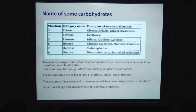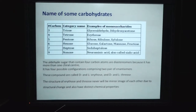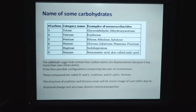If the carbon number is 6, it is called hexose. The examples of hexose are glucose, galactose, mannose, and fructose — these are the primary sources of energy. If the carbon number is 7, it is called heptose; the example is sedoheptulose. If the carbon number is 9, it is called nonose; the example is sialic acid.